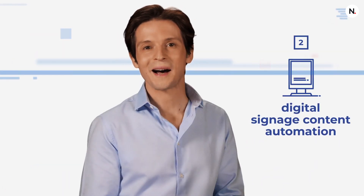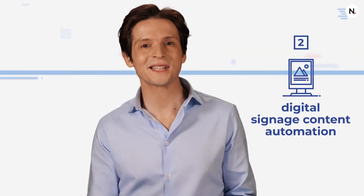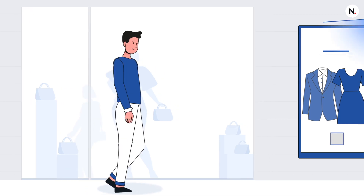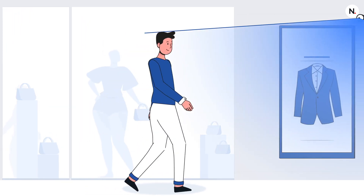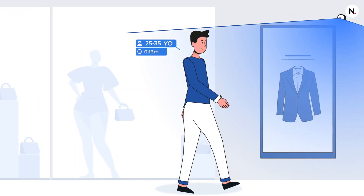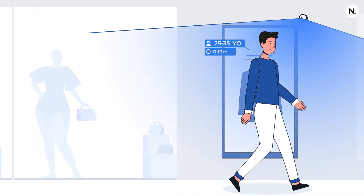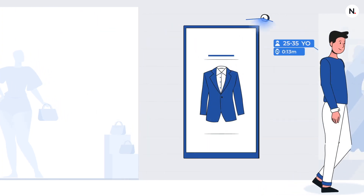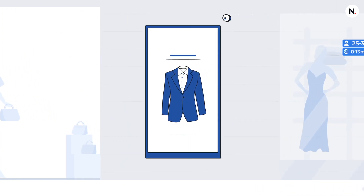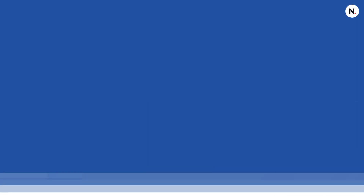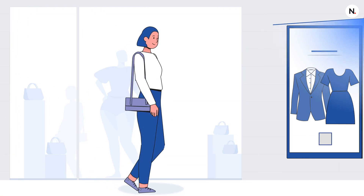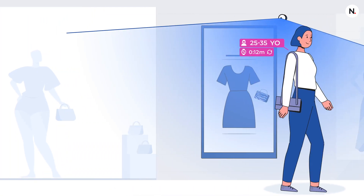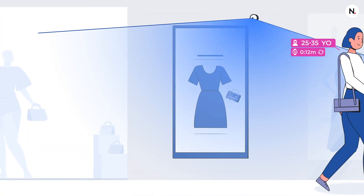Let's move on to our next topic: digital signage content automation. When you interface AquaGee with Navori's QL digital signage software, programmed content reacts and adapts to real-time events based on the viewer's profile. For example, your screens could display unique content to women or men in a specific age group.